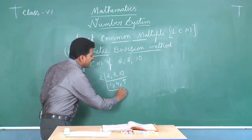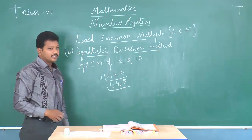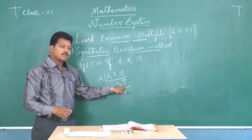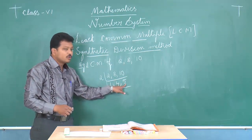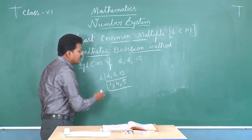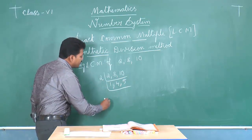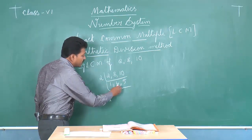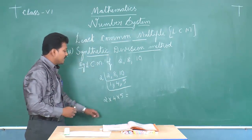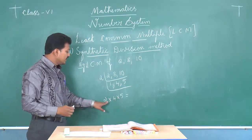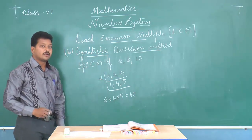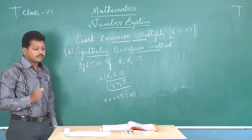We continue the same process until we get co-primes. Are 1, 4, and 5 co-primes? Yes, 1, 4, and 5 are co-primes. Therefore, the LCM is the product of all the divisors and the co-prime values. That is 2 × 4 × 5. Multiplying: 2 × 5 = 10, and 10 × 4 = 40. So 40 is the LCM of the given numbers 2, 8, and 10.